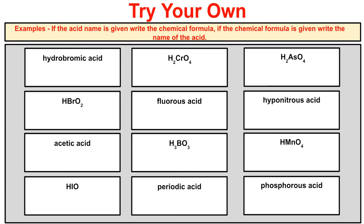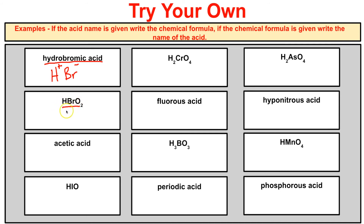I recommend pausing here and trying the practice problems before I go through the answers. For hydrobromic acid: it uses the prefix hydro so no oxygen; hydrogen is 1+ and bromide is 1−, charges add to zero, so just HBr. For HBrO2: BrO2 is bromite, and when bonded to hydrogen the -ite becomes -ous, so this is bromous acid.